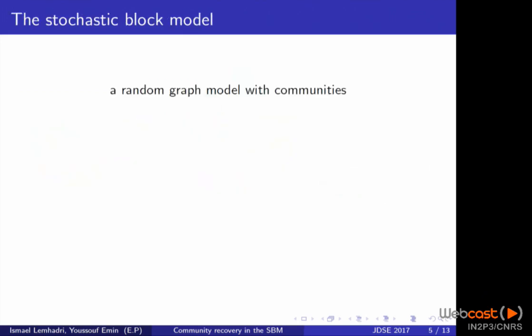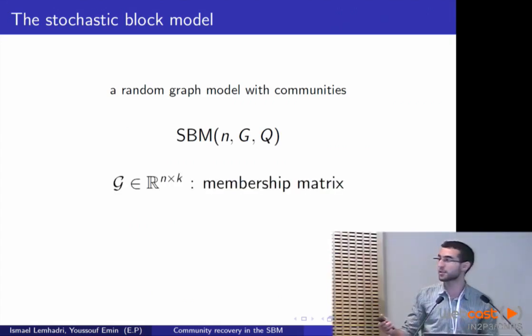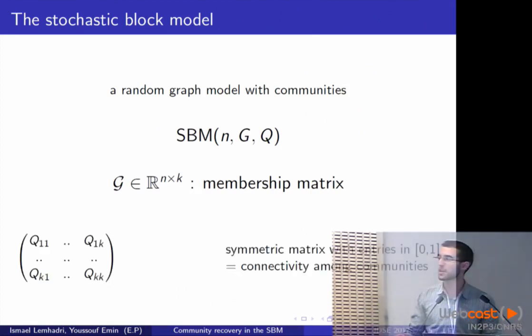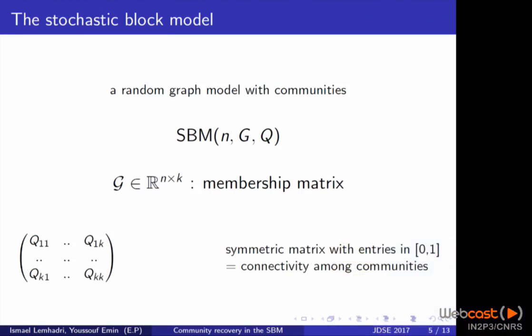So now to the stochastic block model. It's a specific random graph model that relies on communities. And the way it works is it has three parameters basically. You're going to need to know the number of people that you have, N. I'm also going to define G, which is the membership matrix. So it's a matrix of size N by K, K being the number of different clusters. And Q is going to be the connectivity matrix, which tells me the parameters of connections between two people. So if you have someone in community one and another one in community two, they're going to connect according to a Bernoulli variable of parameter q12. And this variable is going to be independent from all the others.